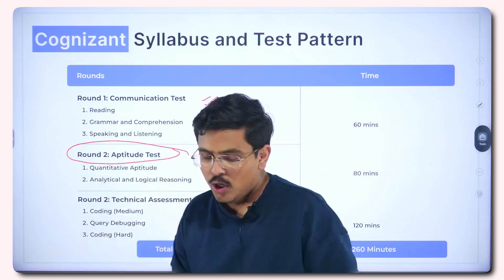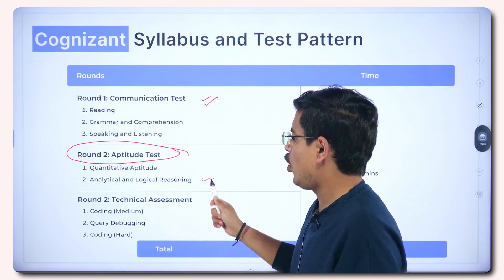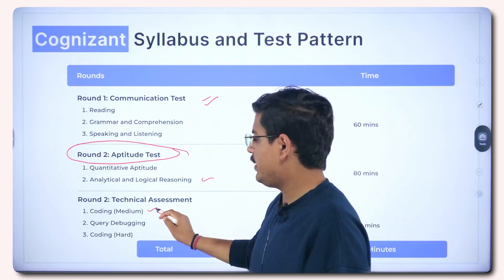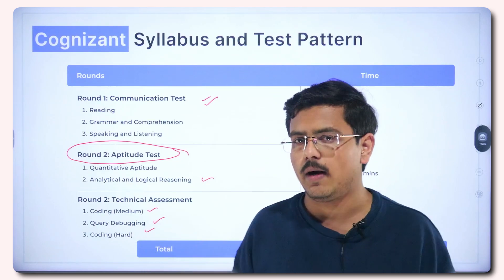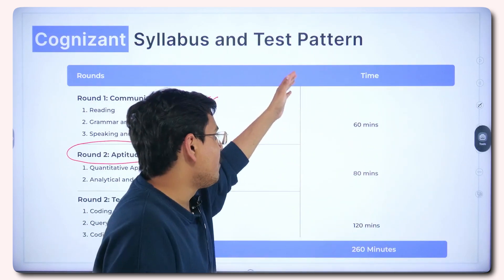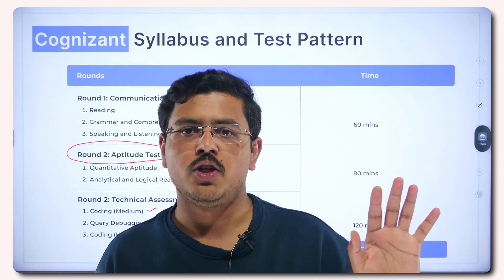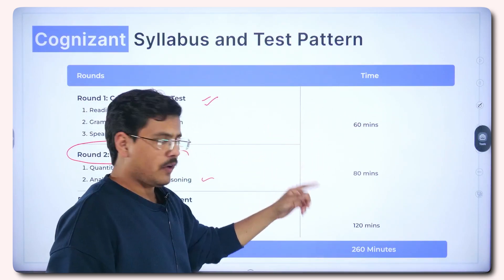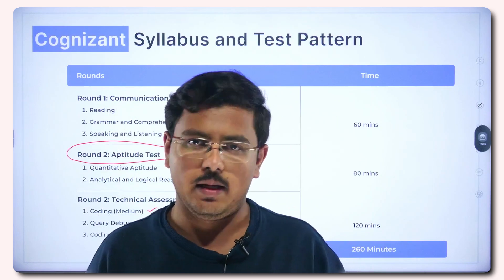Round Two is the aptitude test where you prepare quantitative aptitude and analytical and logical reasoning. In the technical assessment you have one medium coding question and one hard coding question, plus query debugging — generally three questions total. Cognizant always keeps changing the number of questions, so I haven't specified exact counts here.